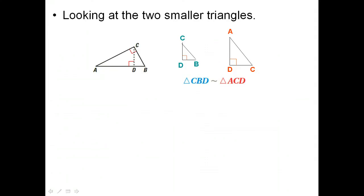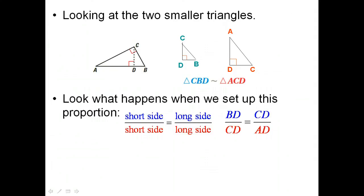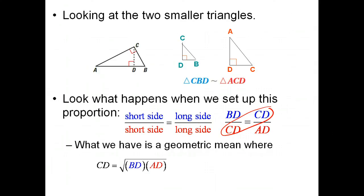Looking at the small and the medium triangle, if we set up our sides of short side to short side and long side to long side, once again we end up with CD being the geometric mean this time. And so we have another geometric mean where CD is the geometric mean between BD and AD.